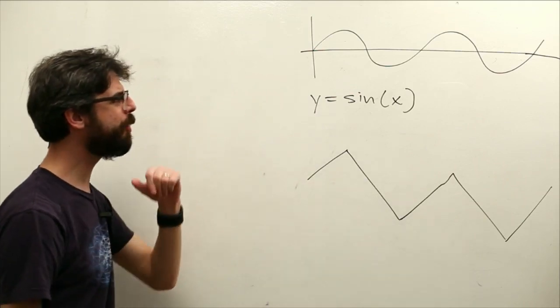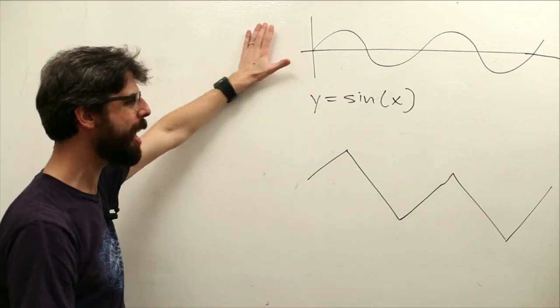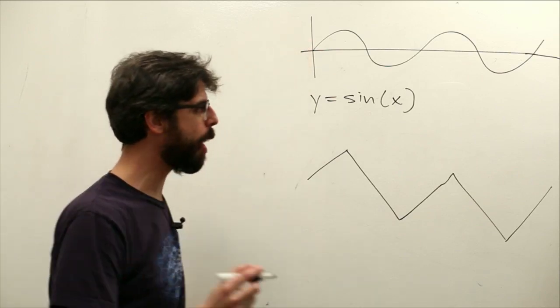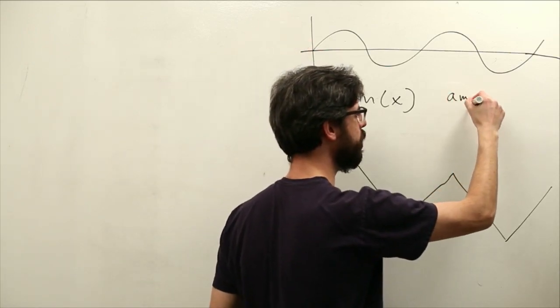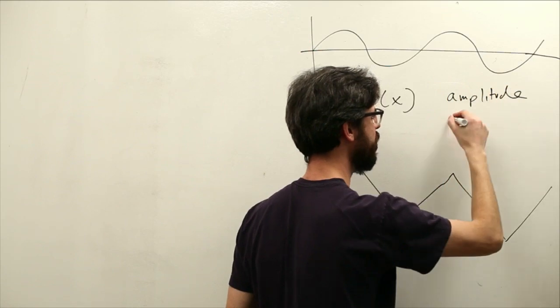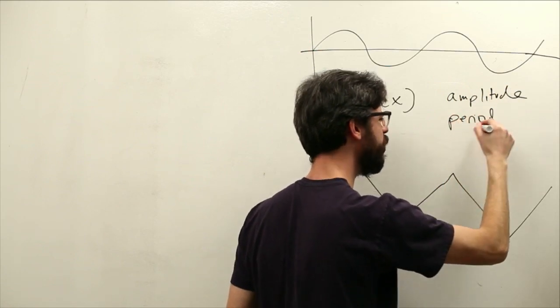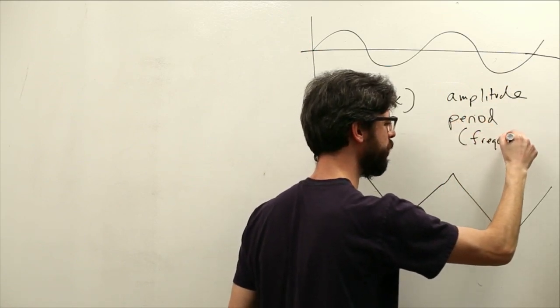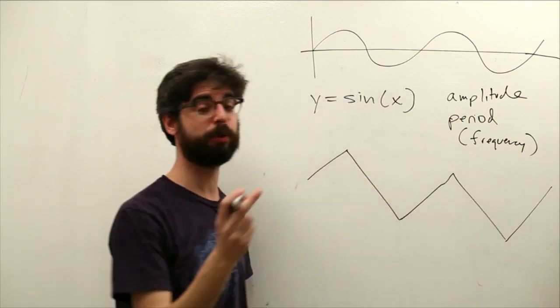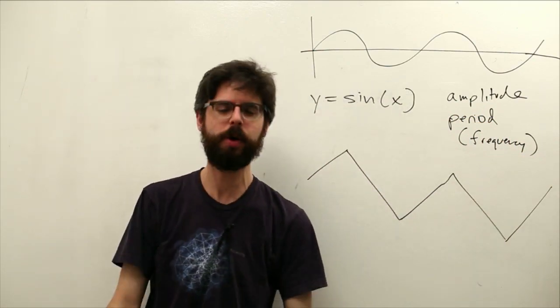So a couple things about this. One thing we should say is waves have properties to them. Two properties that we can think of is one is amplitude and the other is period. And I'll put here in parentheses frequency. Frequency is really just one divided by period.